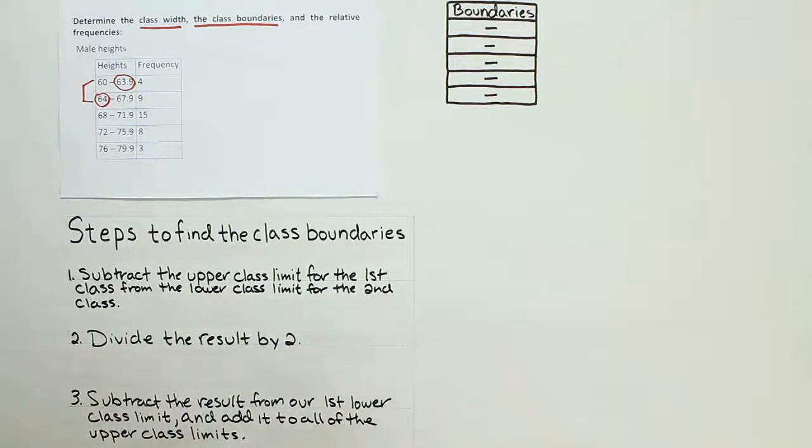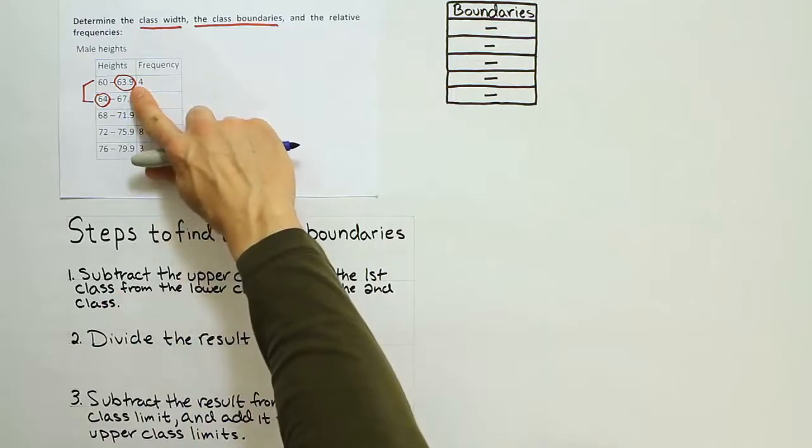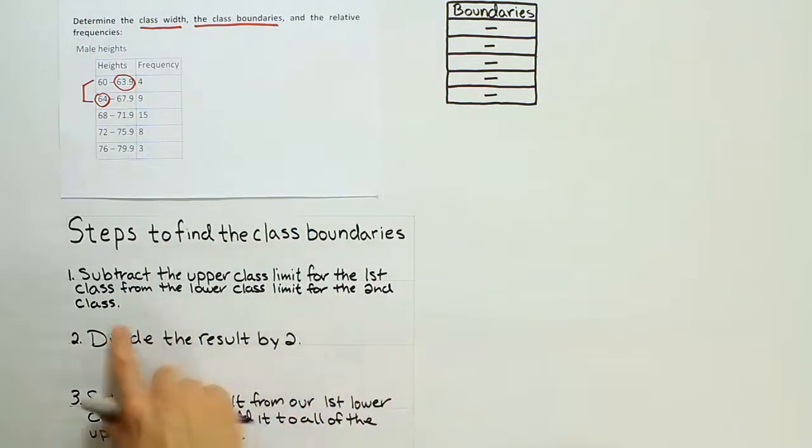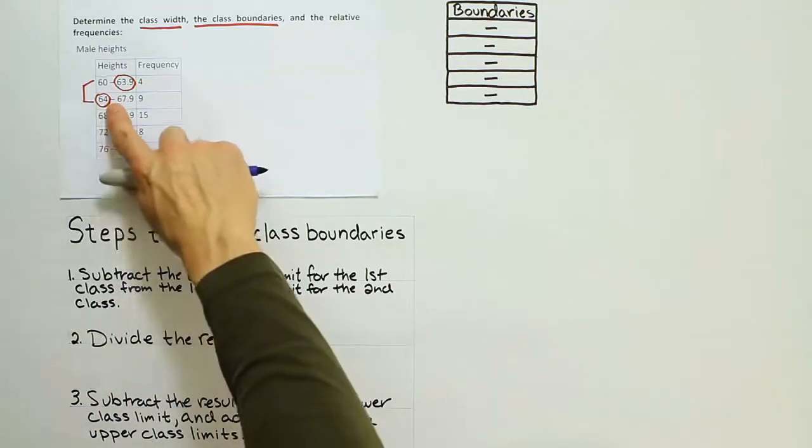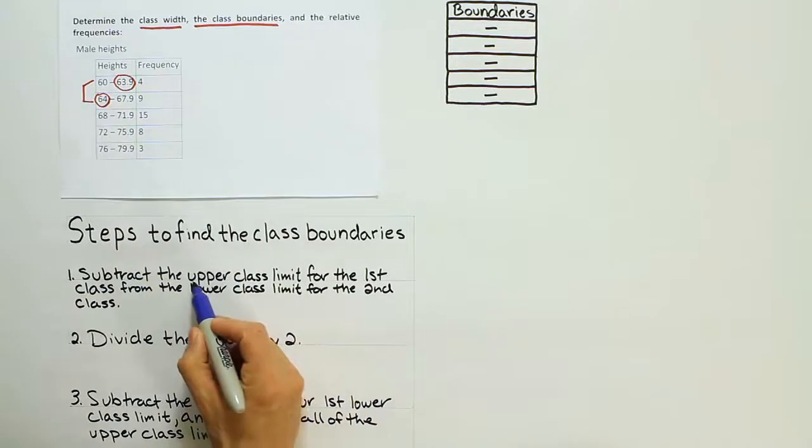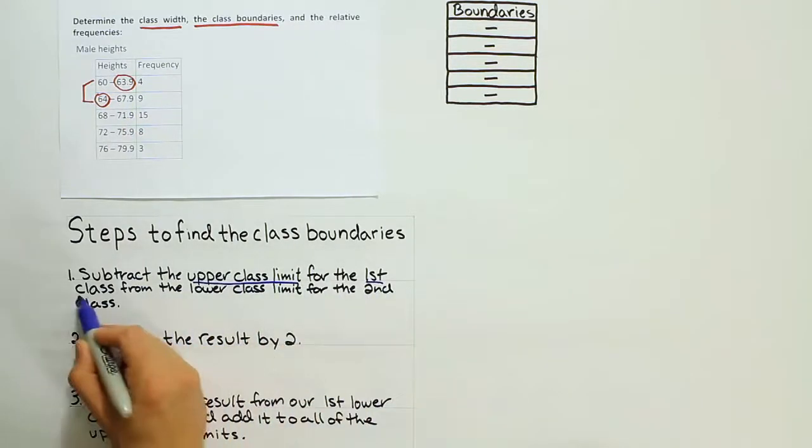So, in this case, the numbers that we're dealing with, the upper class limit for the first class, that's the 63.9 which I've circled already. And then we have the lower class limit for the second class. That lower class limit for the second class is 64. So again, upper class limit for the first class from the lower class limit for the second class.